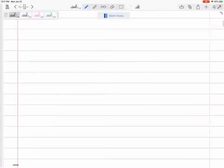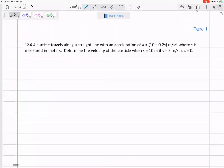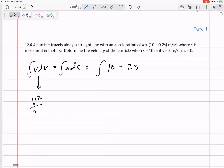Integral VdV equals integral ADS. So I'm going to just take the integral of 10 minus 0.2s. The integral of VdV is not just V, right? Y'all know it's V squared over two. And also, it's not just V squared over two. Let's make this definite integrals, from initial to final condition.